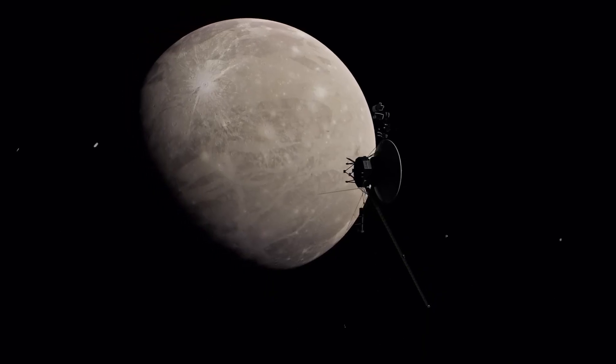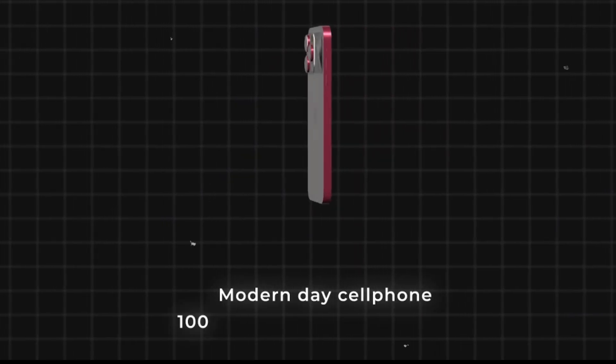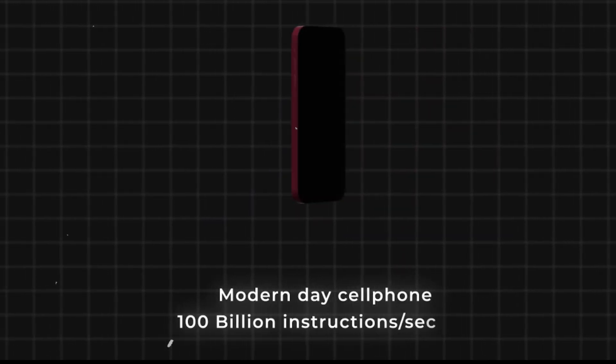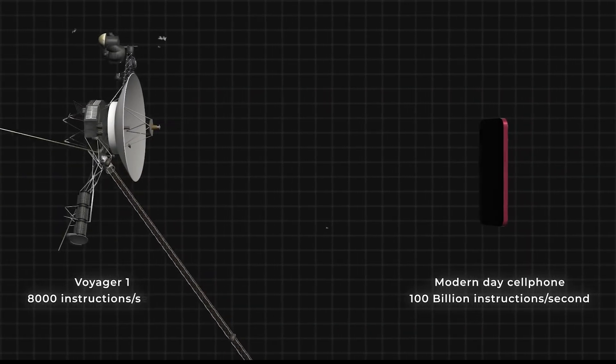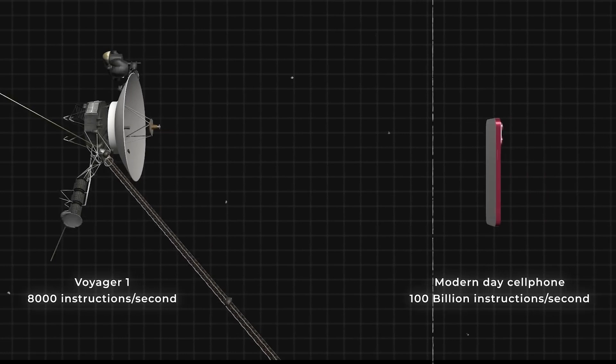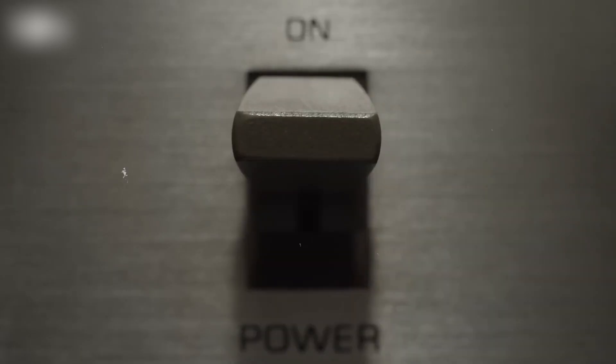For context, while your smartphone can handle over 100 billion instructions per second, Voyager's computers managed just 8,000. But what exactly was the glitch that took so long to fix? Why didn't the traditional strategy of turning it on and off work?